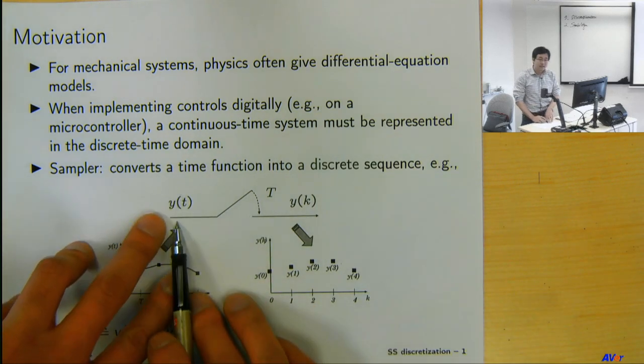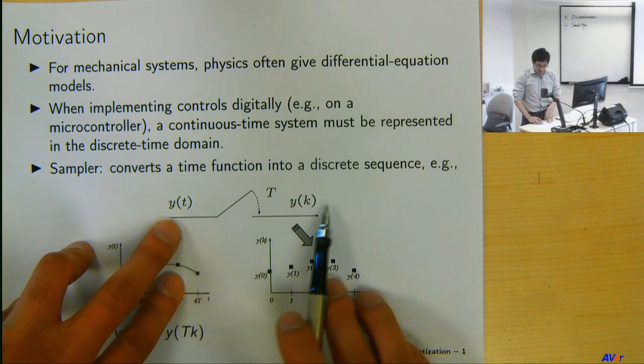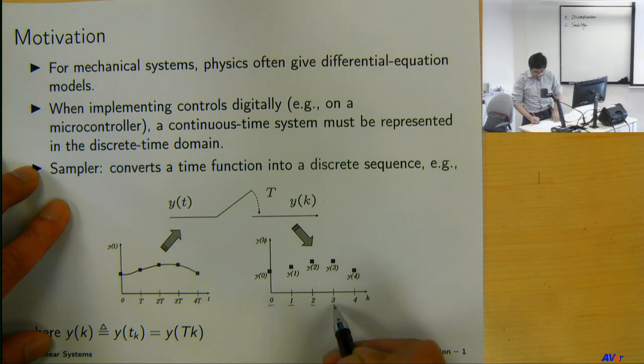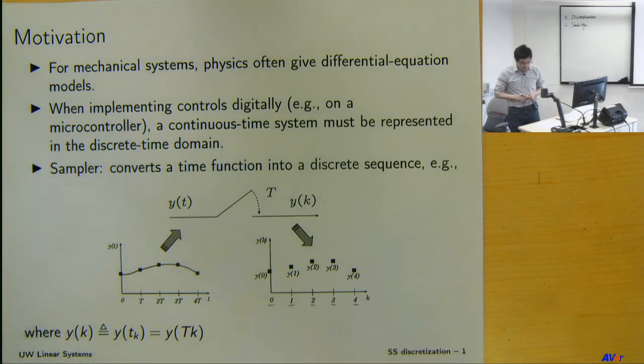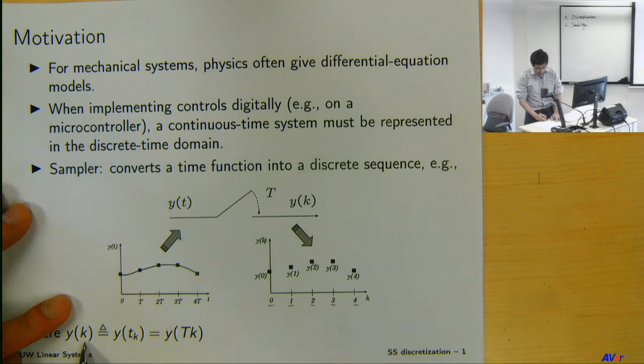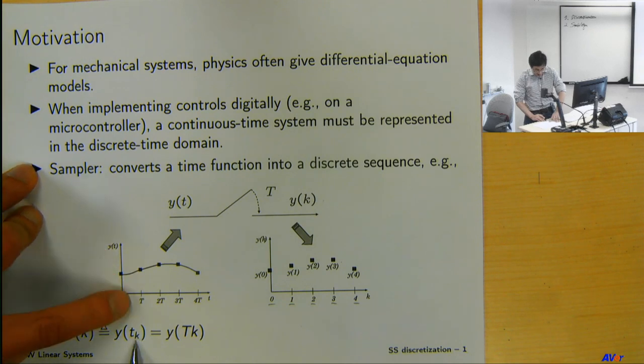It's very common that we need to do this. We have a sampler which samples a continuous time function, y of t, into discrete time sampled. So if your continuous time y(t) looks like this, then your discretized symptoms are valid only at these discrete instances. The notation is y(k) equals y at continuous time instance t(k), defined by T times k, where T is the sampling time.